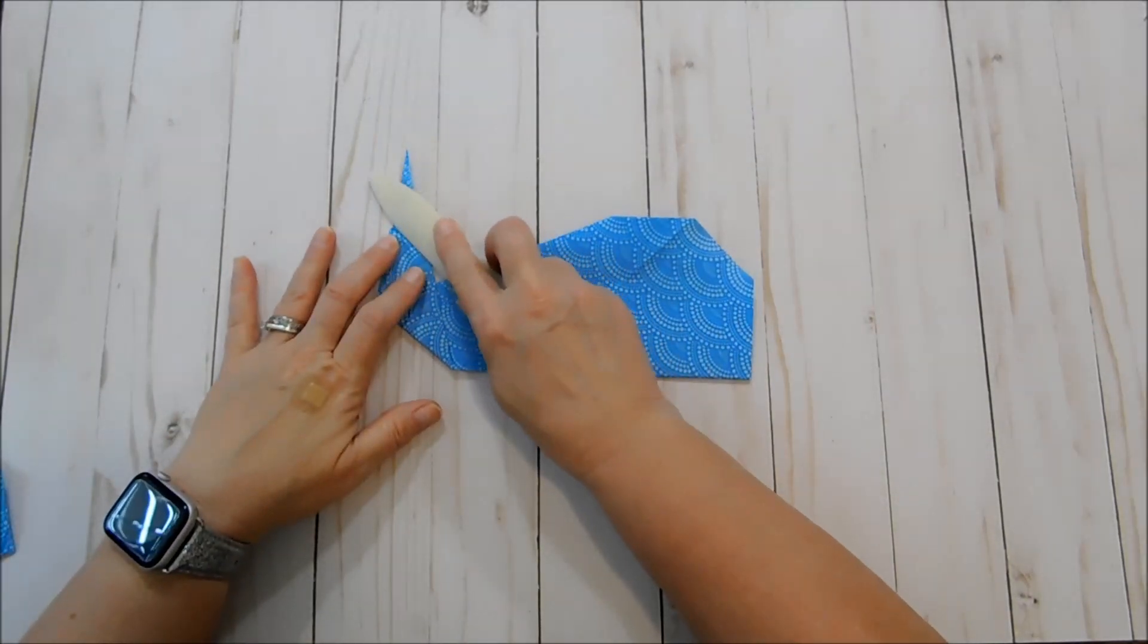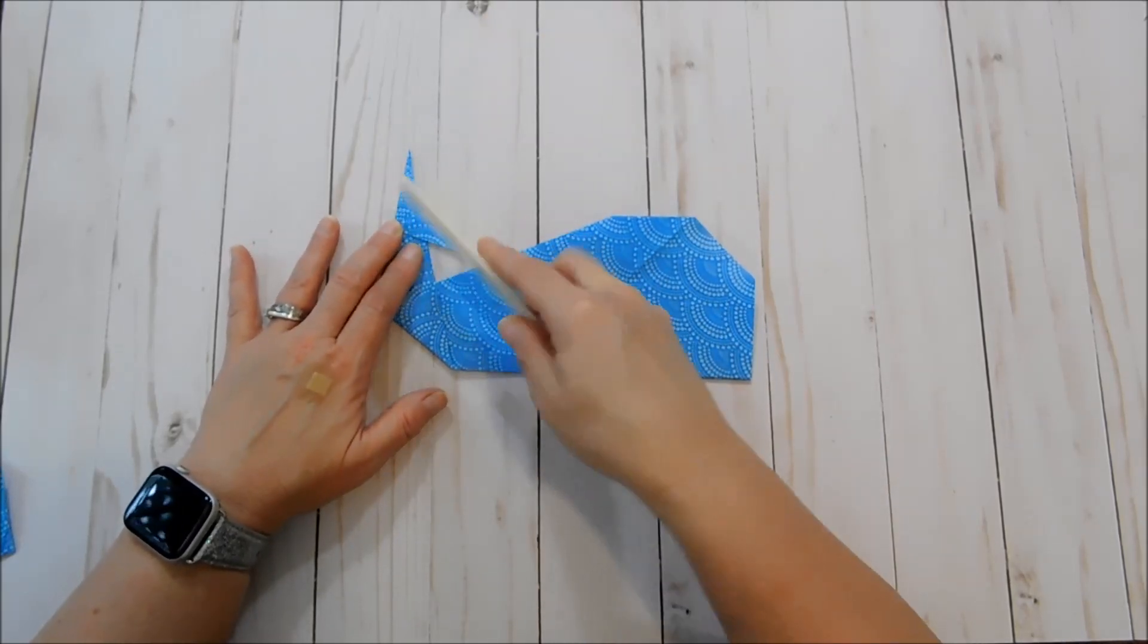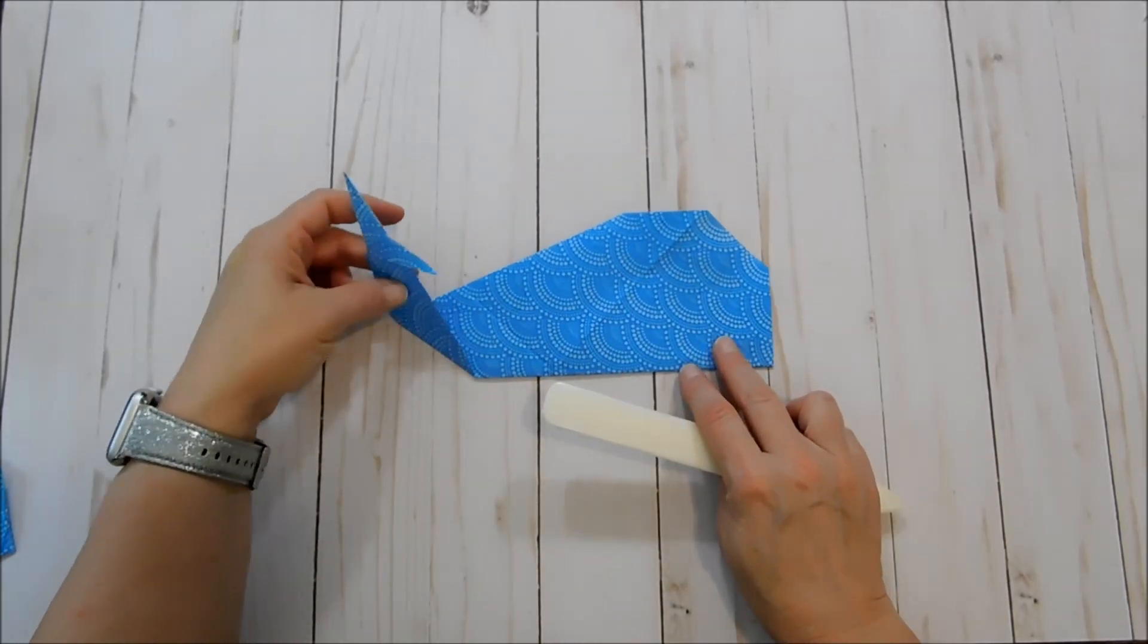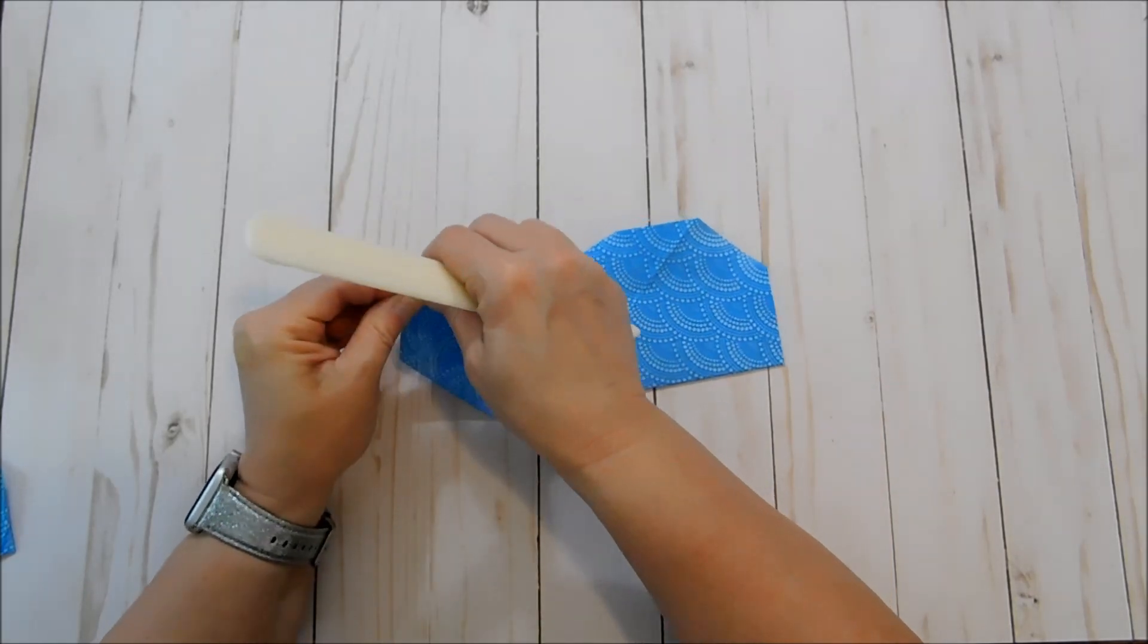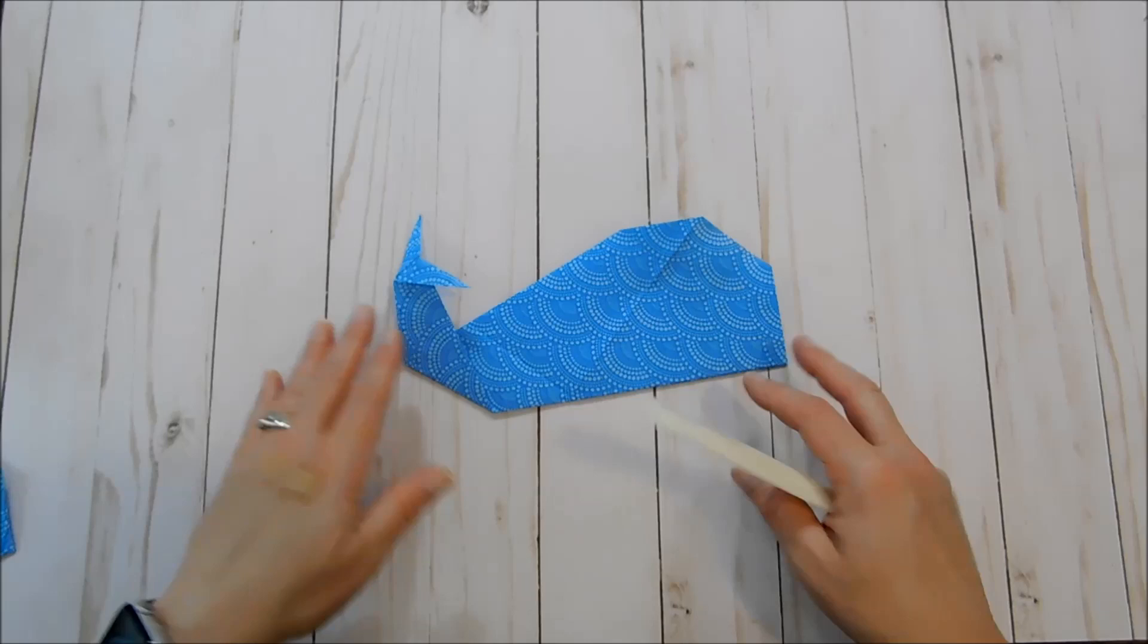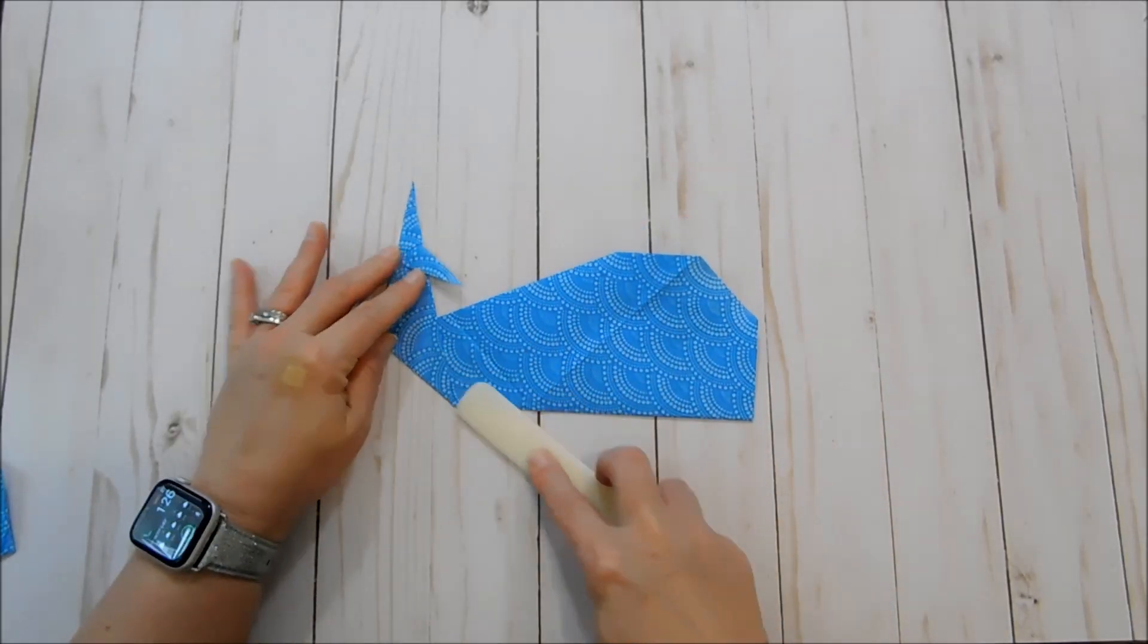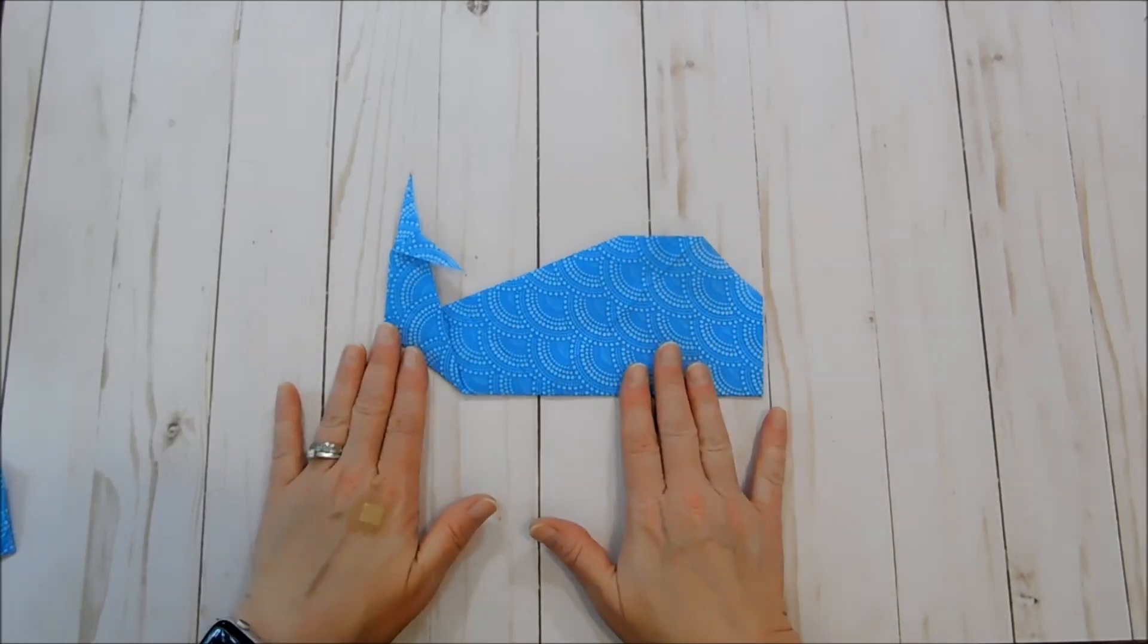So I'm going to take my bone folder and I want to crease that so that the tail fins lay down pretty good. And really you can fold this one back too if you want it to actually pop up and be a little dimensional. But if you want it to lay flat, go ahead and crease everything down with your bone folder. And there is our whale.